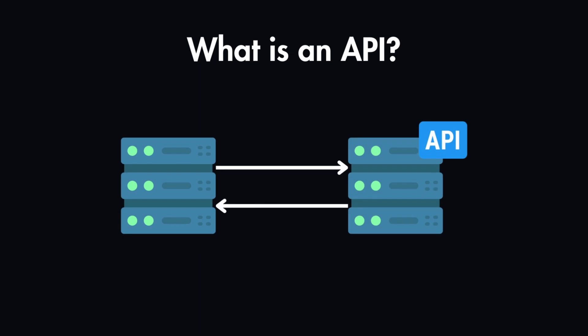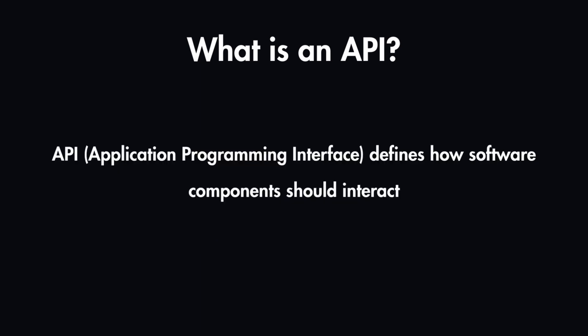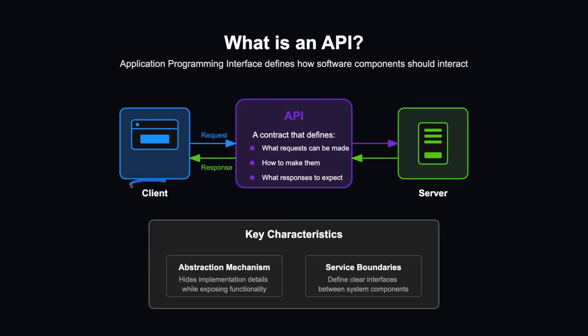API stands for Application Programming Interface, which defines how software components should interact with each other. On one side you have the client, which is either the mobile phone or the browser of the user, and on the other side you have the server, which will be responding to the requests.